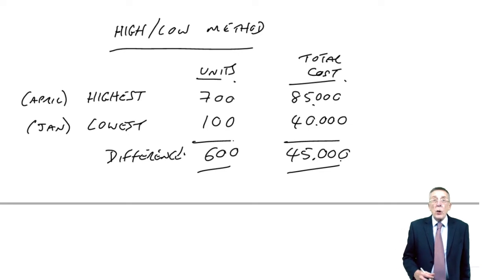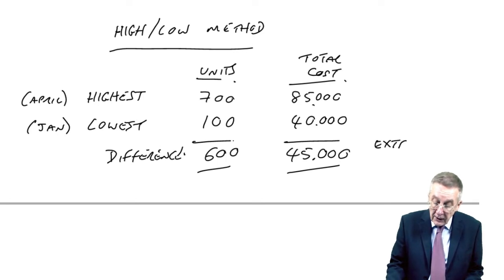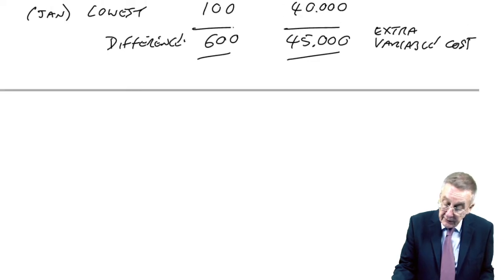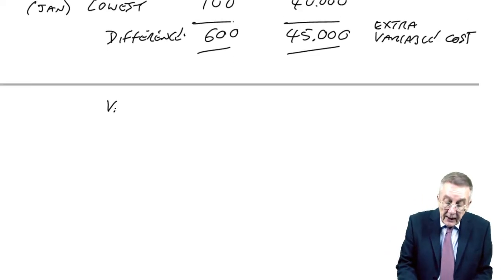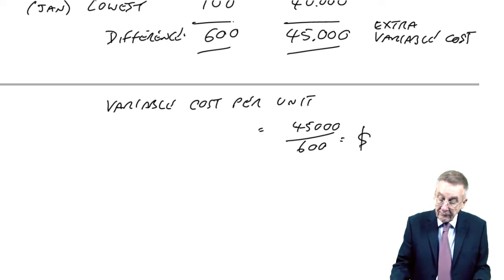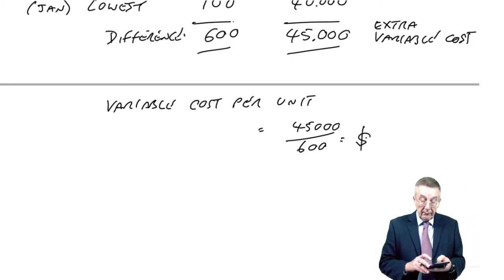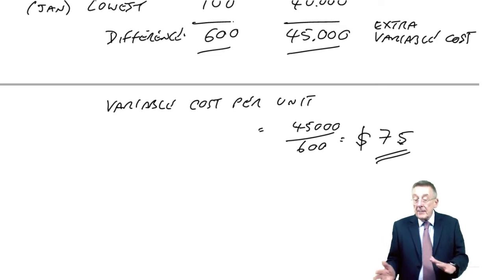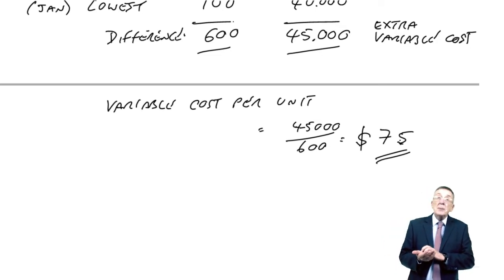I repeat what I said before, because any fixed cost remained unchanged, that is the extra variable cost. Now we've got it - if the variable cost for 600 units is 45,000, the variable cost per unit is 45,000 over 600, which is 75 dollars.